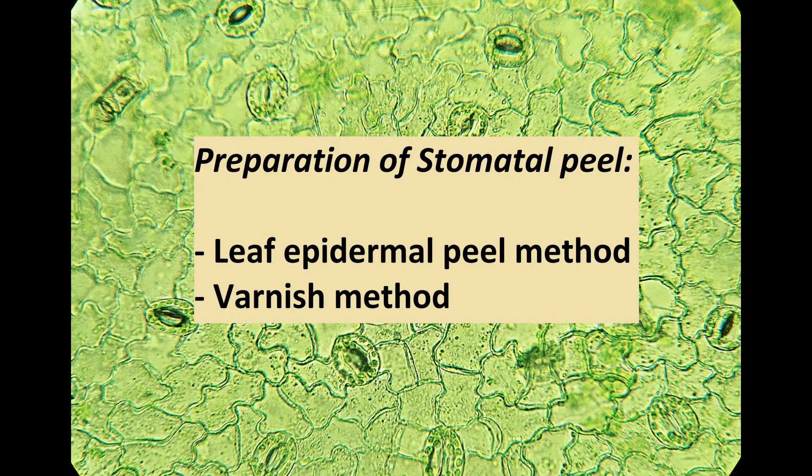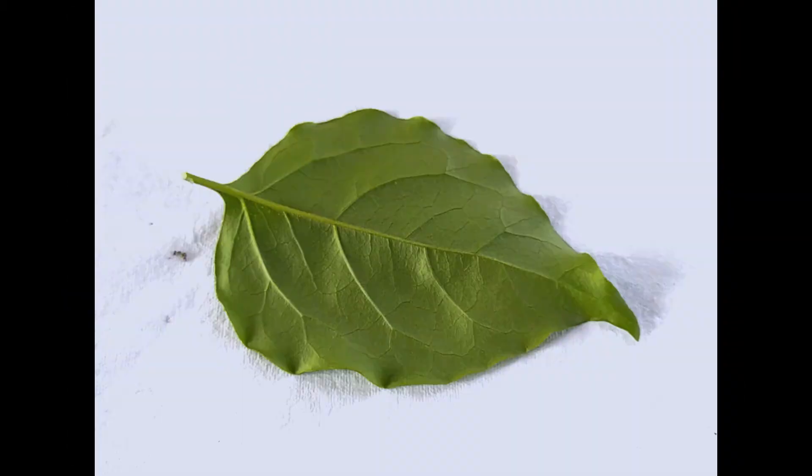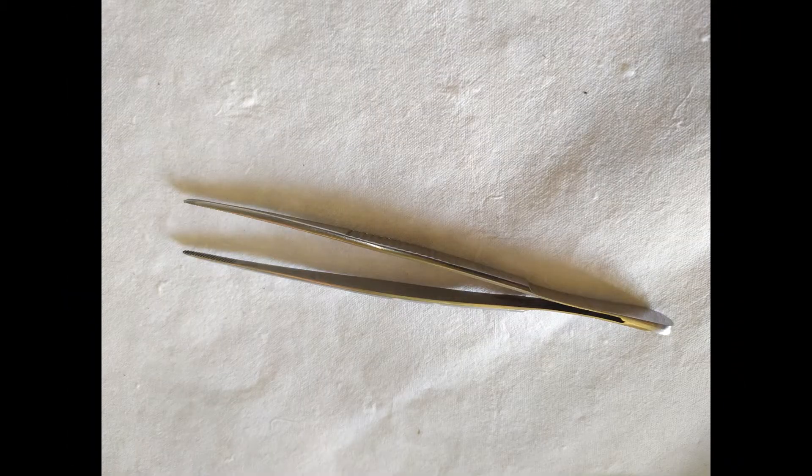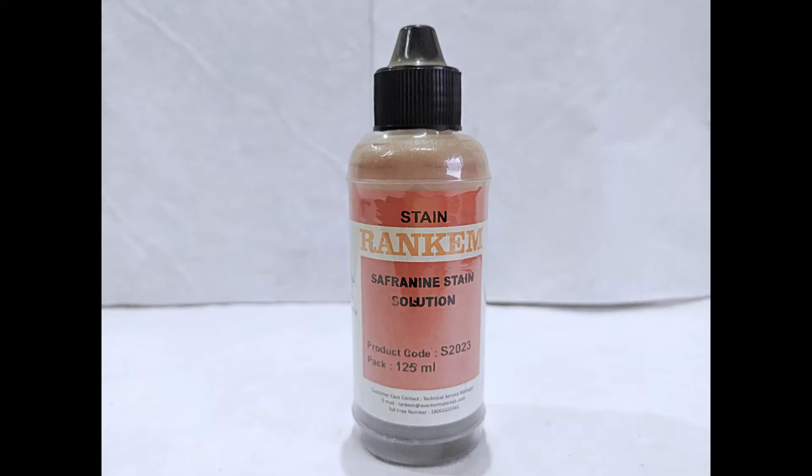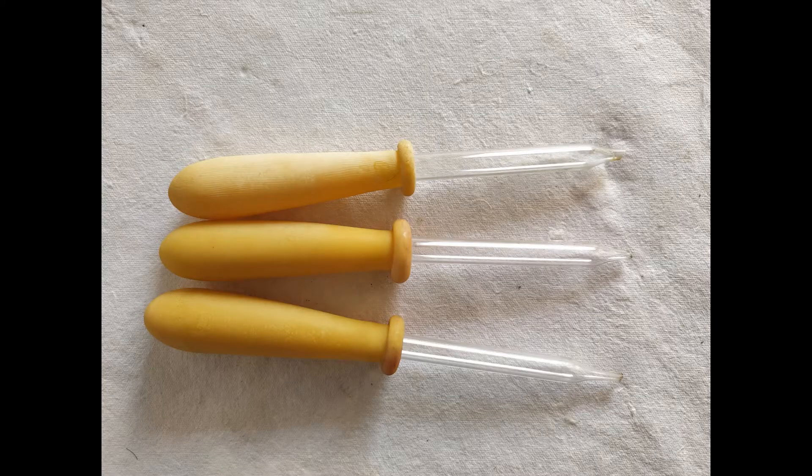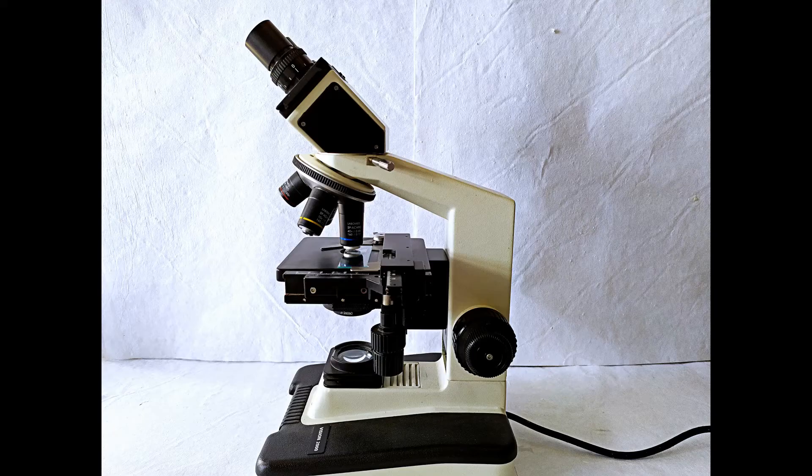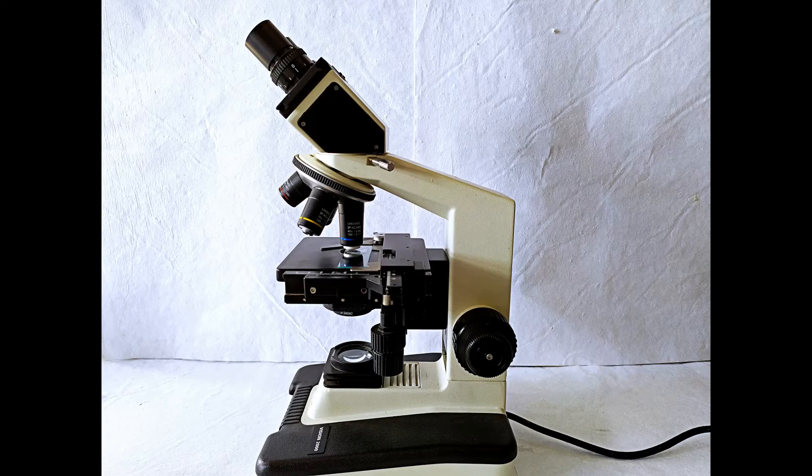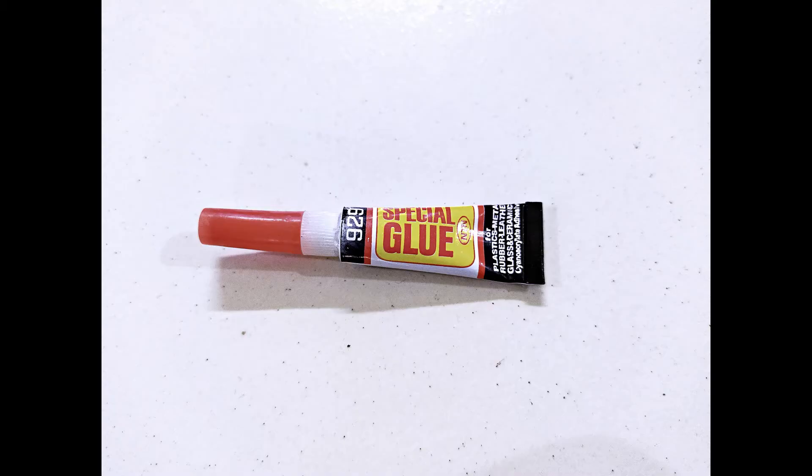For this experiment, we'll need the following: fresh green leaves, tweezers, a staining solution such as safranin or light green, droppers, glass slides and coverslips, a compound light microscope, and a quick drying glue such as superglue or a transparent nail polish.